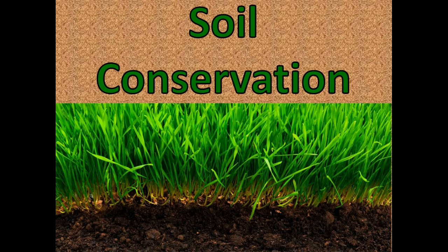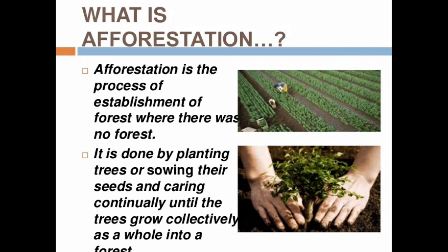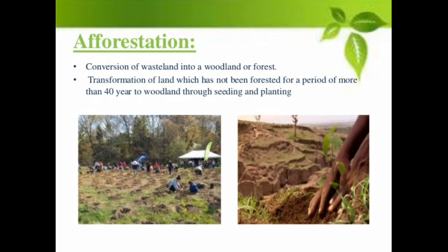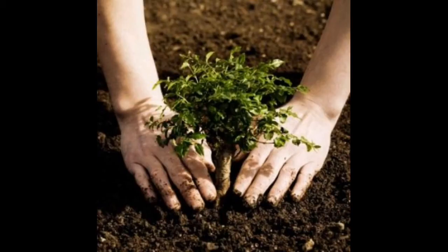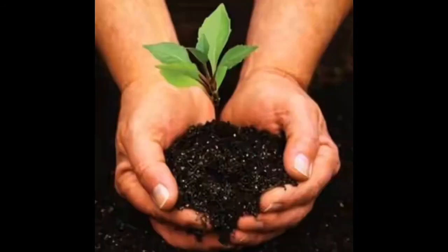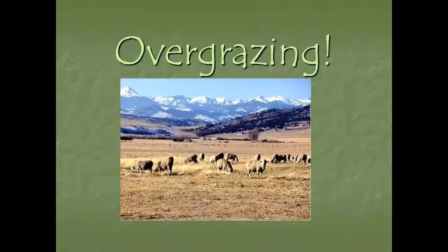Soil is a natural resource and should be conserved. Conservation of soil means protection of soil from erosion and preservation of soil fertility. Measures for soil conservation can be taken in two ways: by checking soil erosion and increasing the fertility of the soil. Checking soil erosion can be done by afforestation — planting trees in areas where soil has become exposed to agents of erosion.